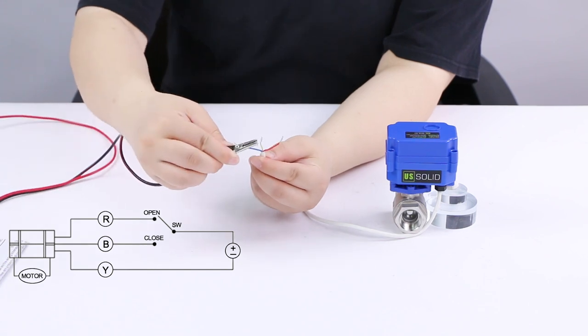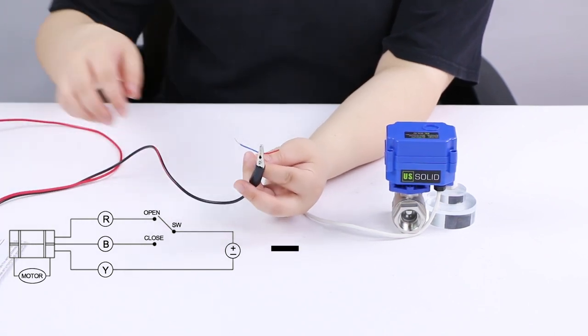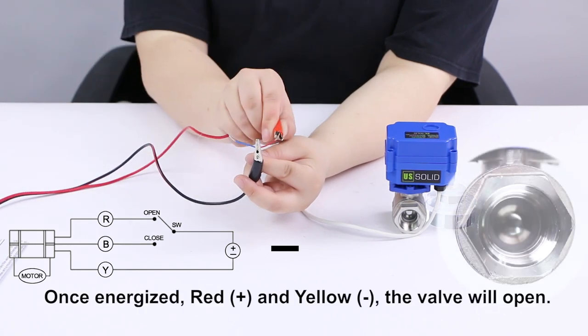Yellow wire should be connected to the negative pole of the power source. When red wire is connected to the positive pole, the valve will open.